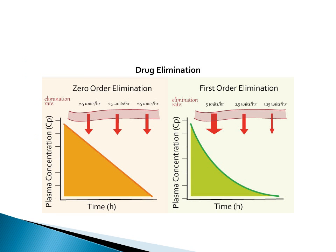For further clarification between these two kinetics of elimination, we can look at two graphs. In first-order elimination: starting at 5 units, 50% is excreted each half-life — leaving 2.5, then 1.25. Every half-life, 50% is excreted. The constant proportion of drug is eliminated per unit of time.